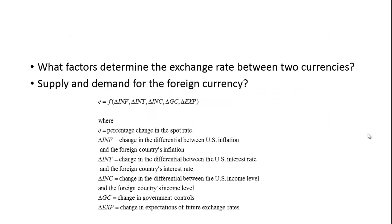What factors determine the exchange rate between two currencies? Basically supply and demand. The exchange rate is a function of these factors: delta INF — the change in the differential between US inflation and the foreign country's inflation rate; delta INT — the change in the interest rate differential; delta INC — the change in the income level differential; delta GC — a change in government controls; and delta EXP — a change in expectations of future exchange rates. I'm going to focus on the first three.